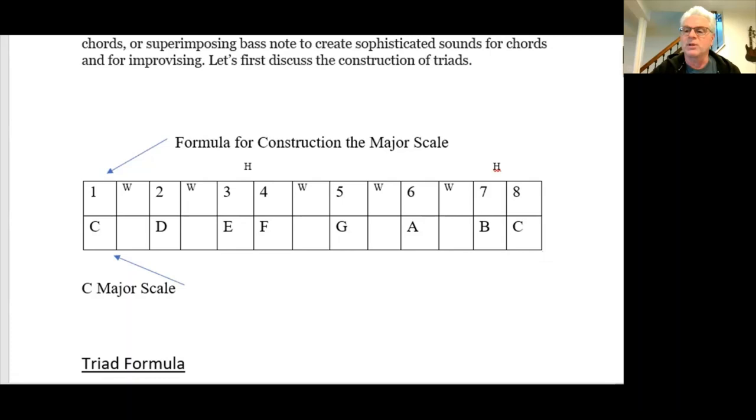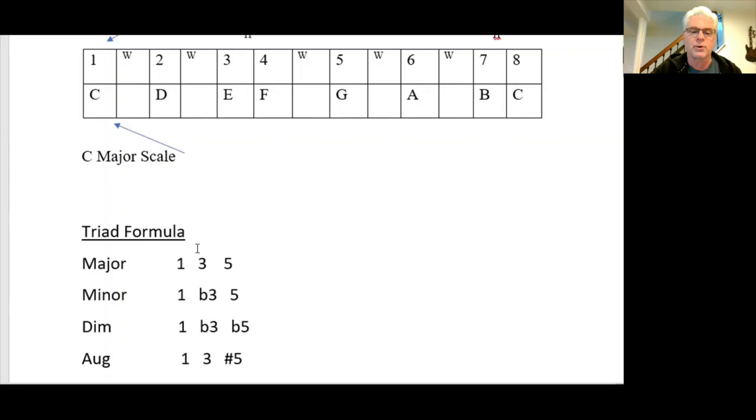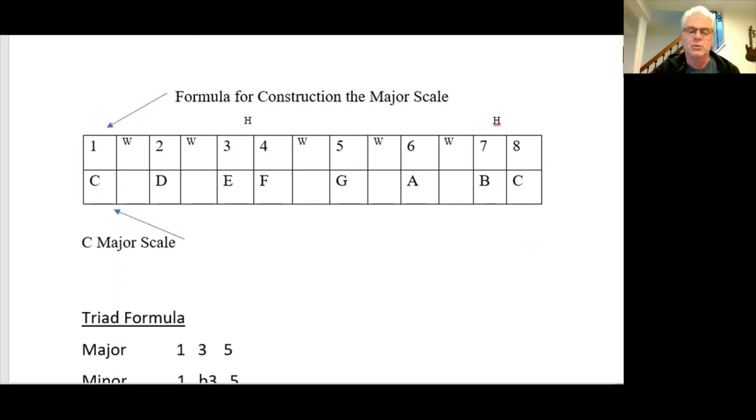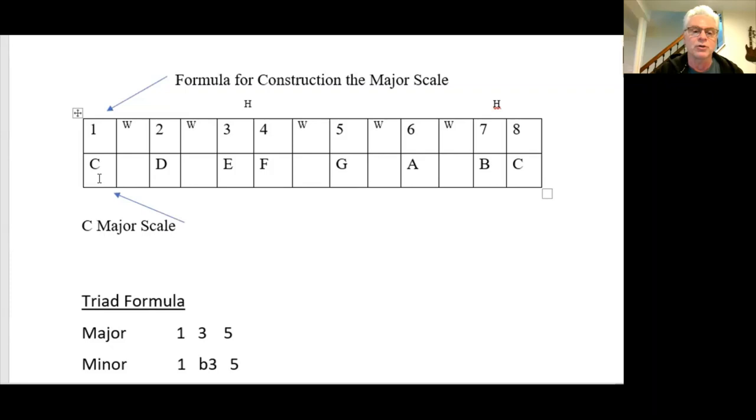So the formula for building a major triad is we're going to take the first, the third, and the fifth note of any major scale. In this case, it'll be C. We put them together and that will build our major triad. So one, three, five, and the key of C is C, E, and G. And if you notice, we have a C to E is an interval of a major third, and E to G is an interval of a minor third. That will result in a C major triad.